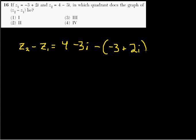Alright. Next problem. Number 16 says if Z1 is negative 3 plus 2i and Z2 is 4 minus 3i, in what quadrant does the graph of Z2 minus Z1 lie? So basically, we're just doing addition here with complex numbers. So Z2 minus Z1 is equal to 4 minus 3i. That's just Z2 minus the quantity minus 3 plus 2i.